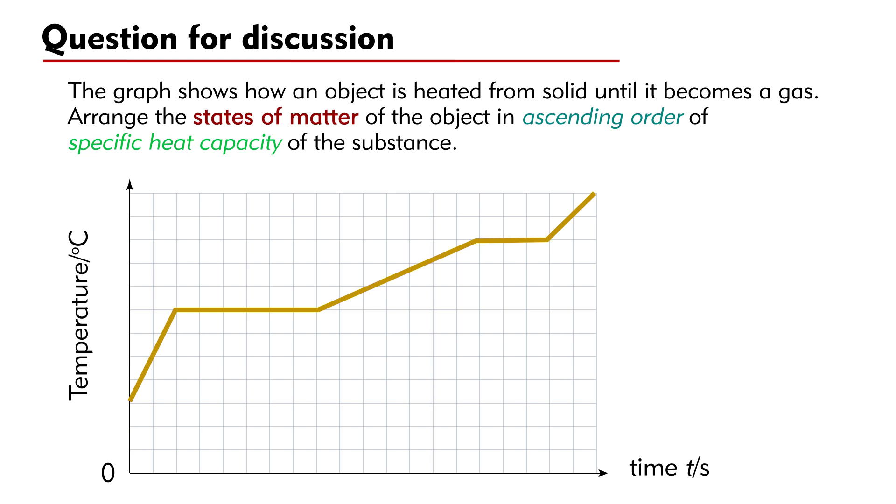Question. The graph shows how an object is heated from solid until it becomes a gas. Arrange the states of matter of the object in ascending order of specific heat capacity of the substance.